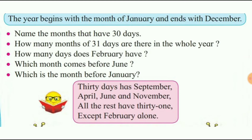All the rest have 31 days, except February alone. September, April, June, and November have 30 days. February has 28 or 29 days. The remaining months have 31 days.